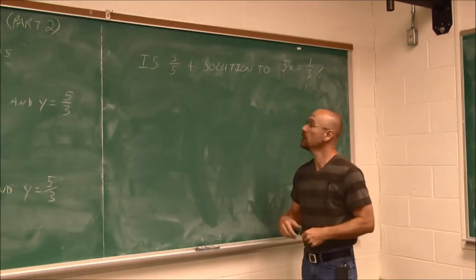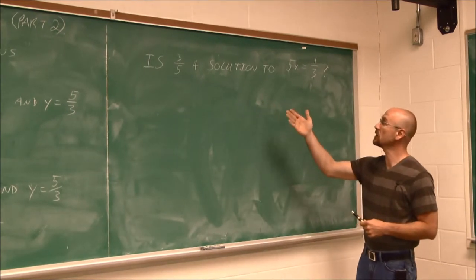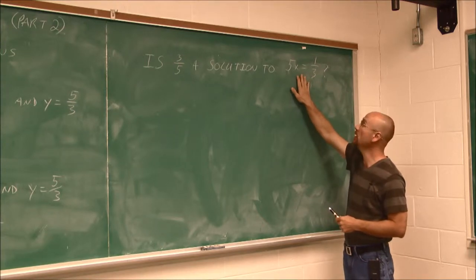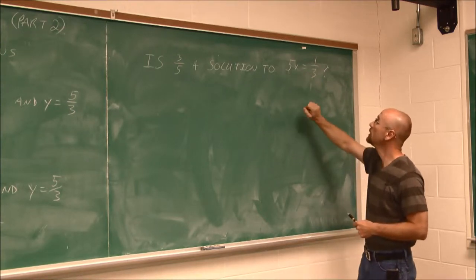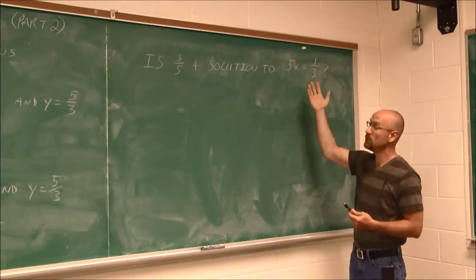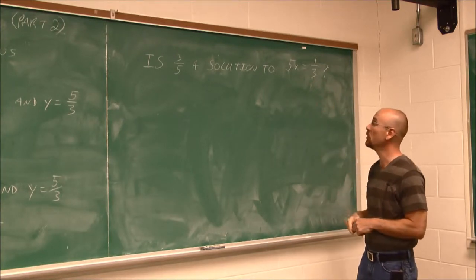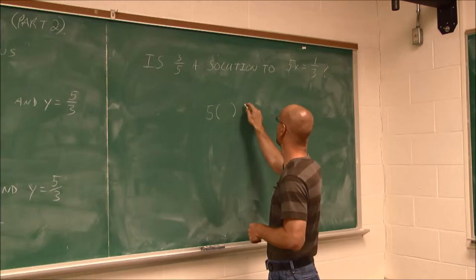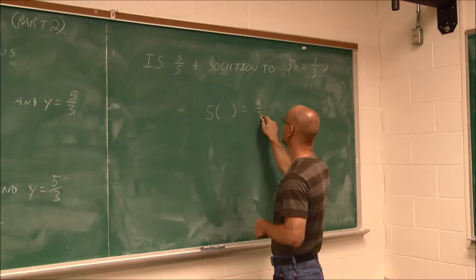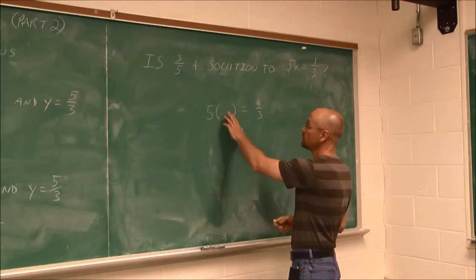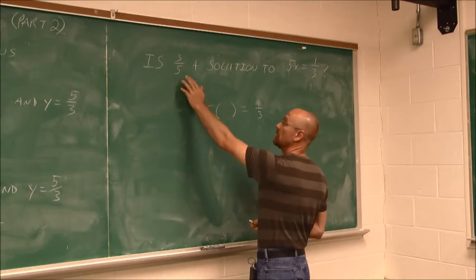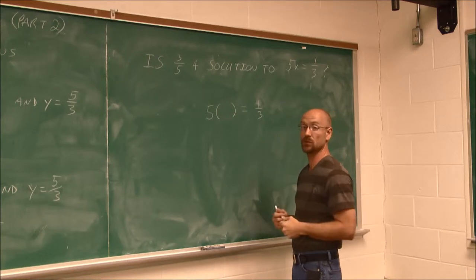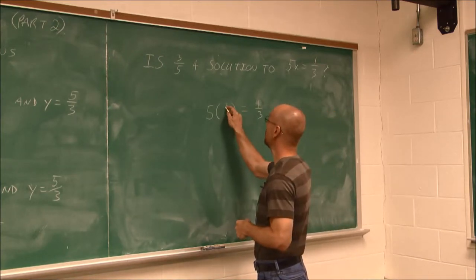It says, is 3 fifths a solution to 5x equals 1 third? Now this is an equation, not an expression. So what we have to do is essentially evaluate. I have 5 times some number equal to 1 third. I'm going to put in the given value because we want to know, does 3 fifths make this a true statement? So I put in 3 fifths.